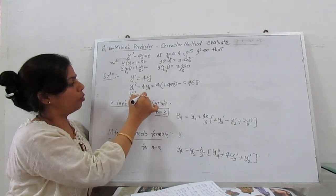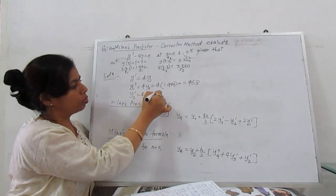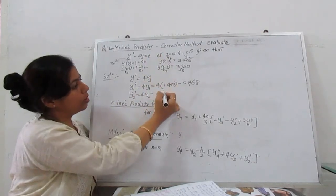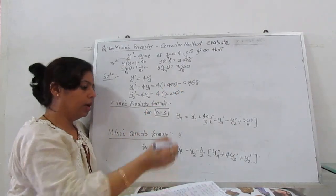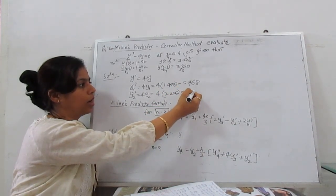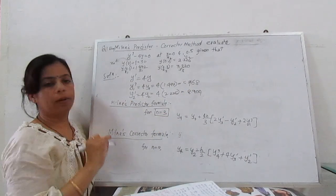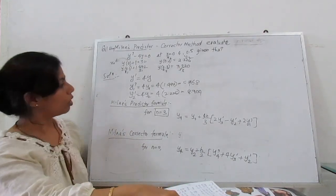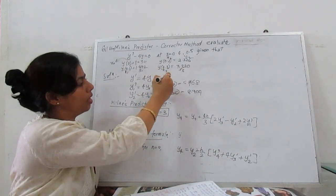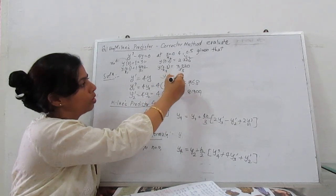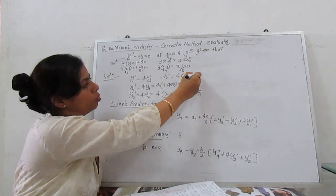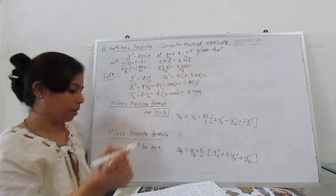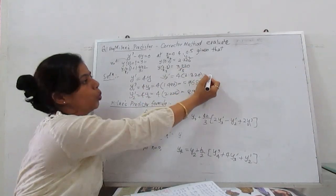Similarly, y'₂ is 4 times y₂. So 4 times 2.226, when we calculate this, gives 8.904. Next is y'₃, which is 4 times y₃. y₃ is 3.320, which gives 13.28.